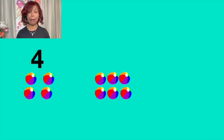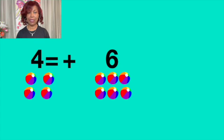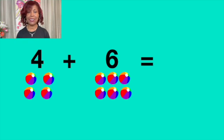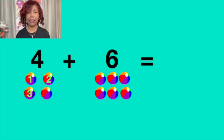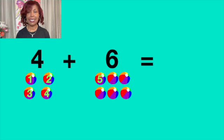Cuatro más seis igual a diez. Four plus six equals to ten. Vamos a contar. Let's count. Uno, dos, two, tres, three, cuatro, cinco, five, seis, six.